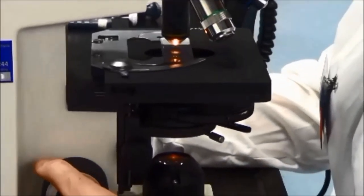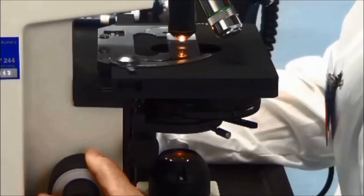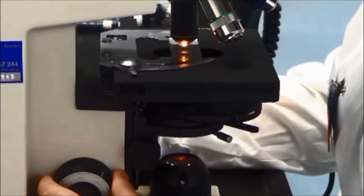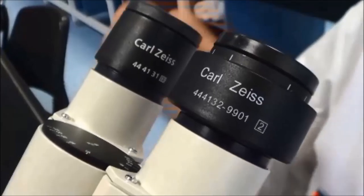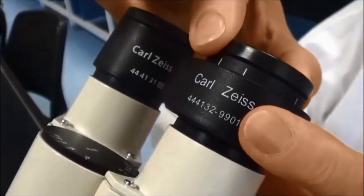First, look through the fixed ocular lens eyepiece, which is on the right. Focus on the specimen using the coarse, then the fine focus knobs. Set the focus for the other eye by turning the lens of the focusing eyepiece if necessary.